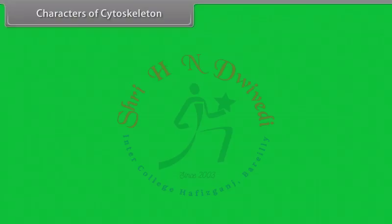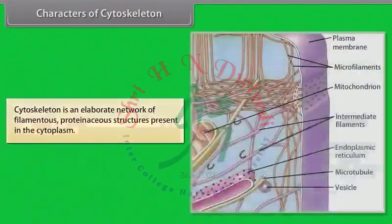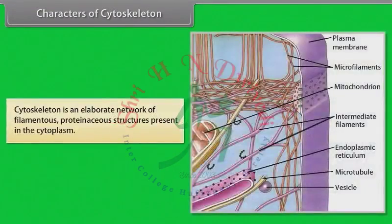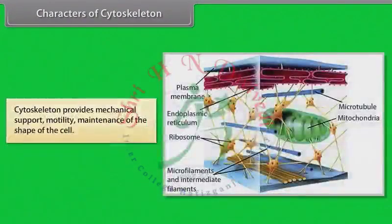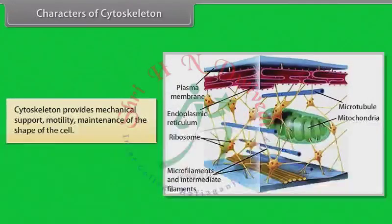Characters of cytoskeleton. Cytoskeleton is an elaborate network of filamentous, proteinaceous structures present in the cytoplasm. Cytoskeleton provides mechanical support, motility, and maintenance of the shape of the cell.